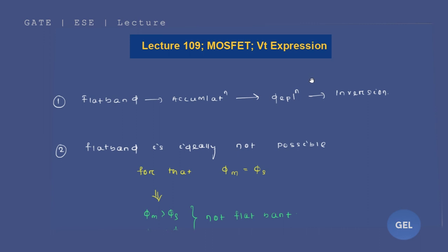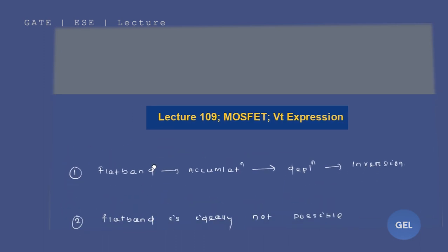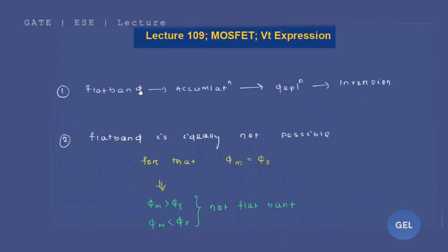Now let me explain it to you one by one. We are only going to stick with the formulas and the kind of analysis which is important for your GATE exams point of view. Now listen to this carefully. We always do the analysis in this term: we go for the flat band, then accumulation, then depletion, then inversion.